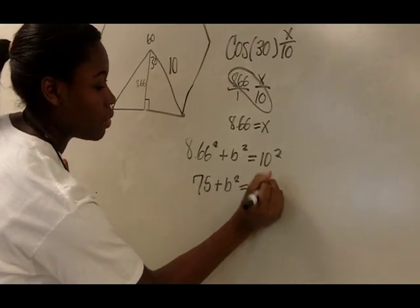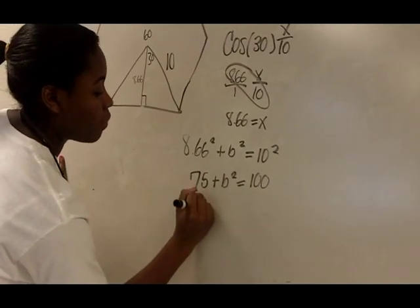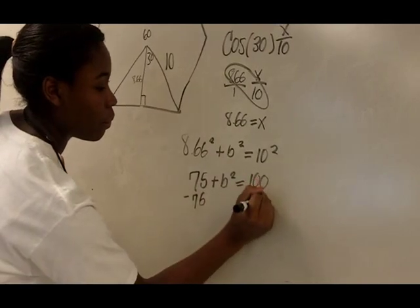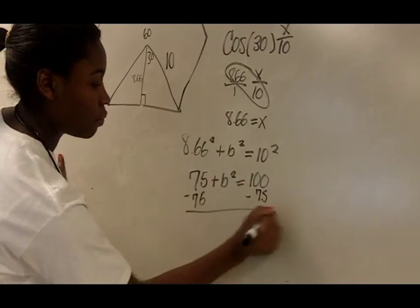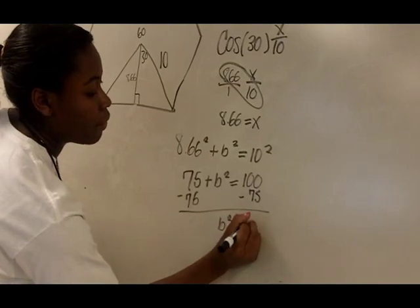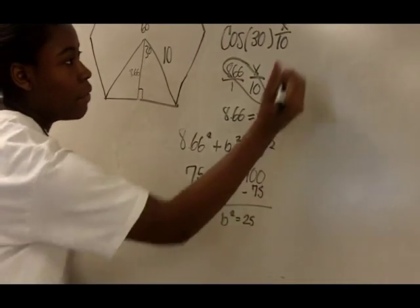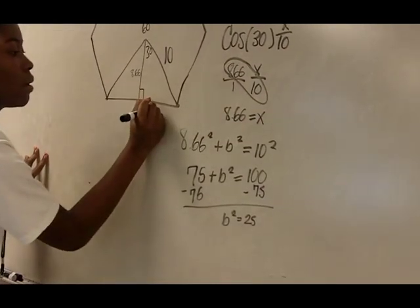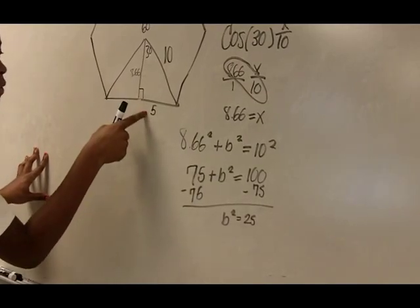And 10 squared is 100. So then you subtract from both sides, so that b squared equals 25. And the square root of 25 is 5, so half of that side is going to be 5.